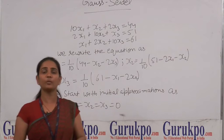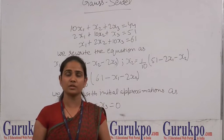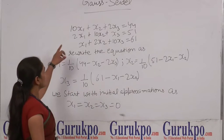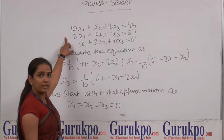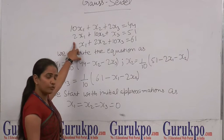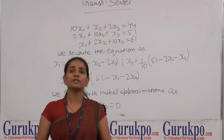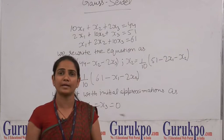First of all, what we have to do is we will arrange these equations in the form where the coefficient of x1 should be of the highest order, then the coefficient of x2 should be highest, and the last equation should have the coefficient of x3 as the highest.